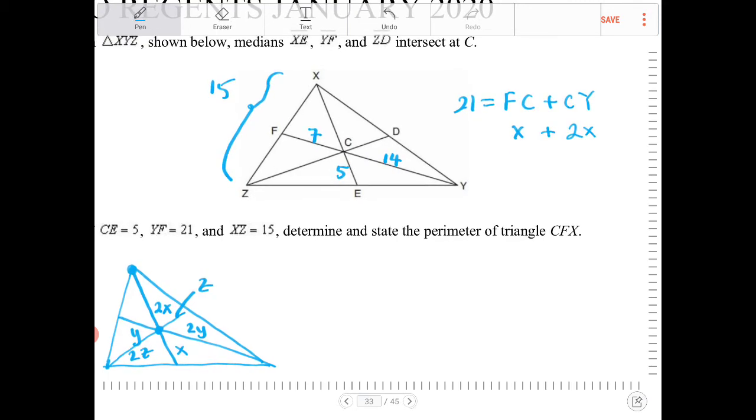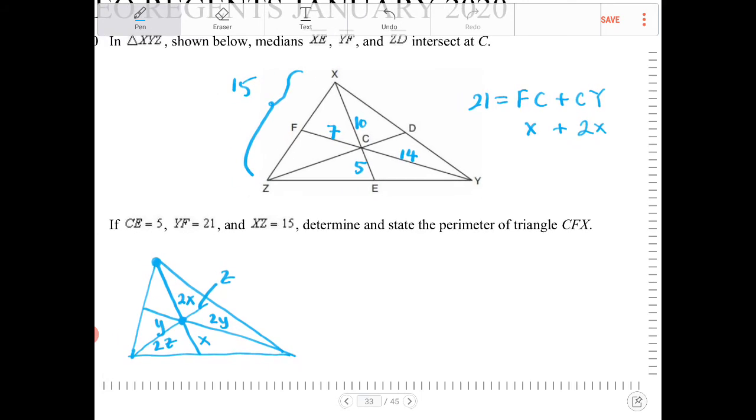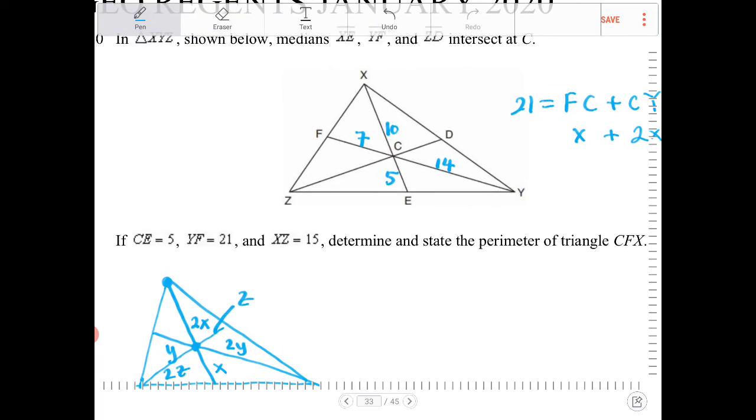And if CE is equal to 5, then that means XC must be 10. And one of the properties behind a median is it bisects the opposite side. So if XZ is equal to 15, then that means XF must be 7.5, and this guy must be 7.5.